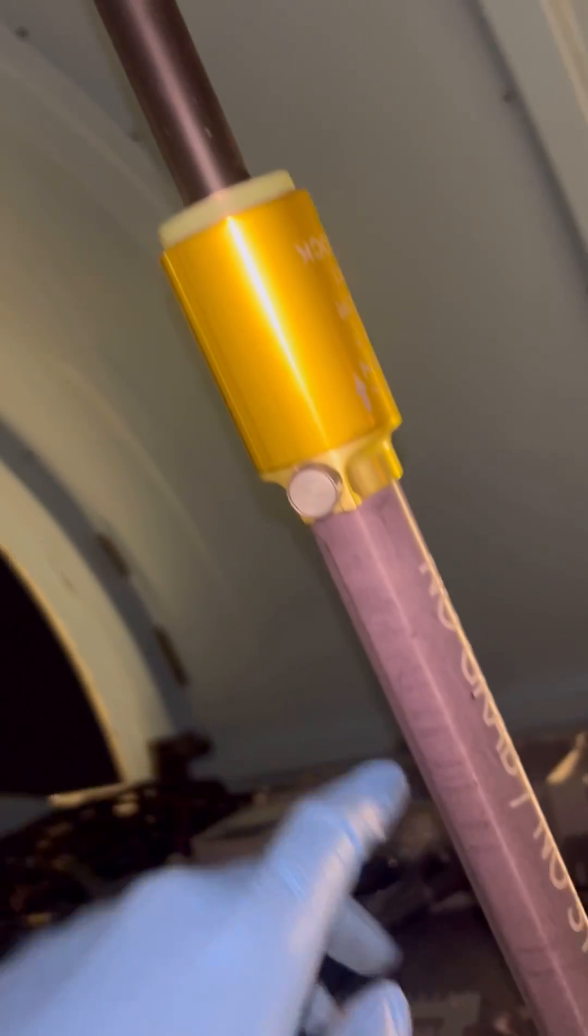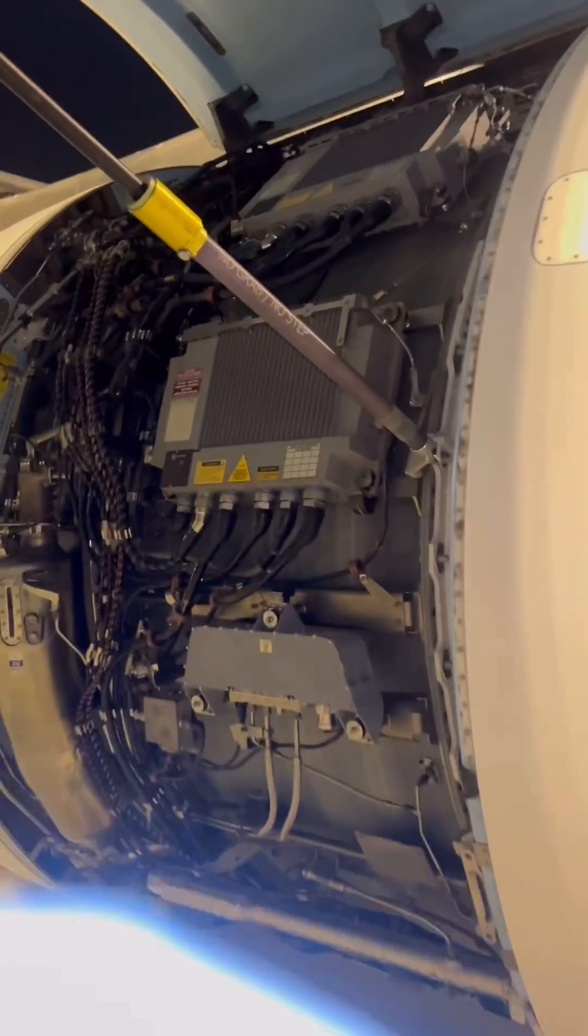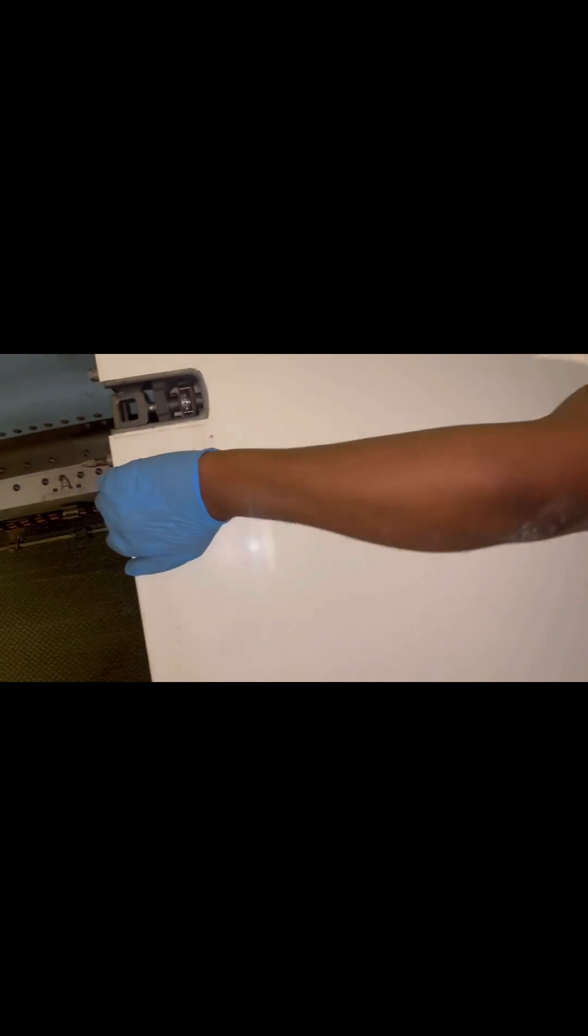Now once the latches are open, we pull the fan cowls open and we will make sure that these hold-open stay rods are locked. There's two of them - this is the first one and we also have a second one in the aft. I'll show you later, we'll pull it out and we'll lock it.